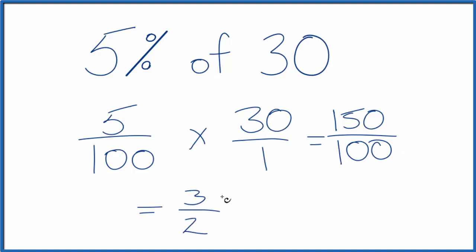So we could also say it's 3 halves, which we could write as a mixed fraction, 1 and 1 half, or if you wanted a decimal, you could have 1.5.